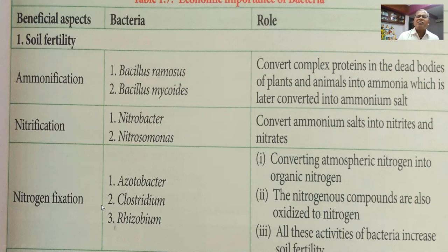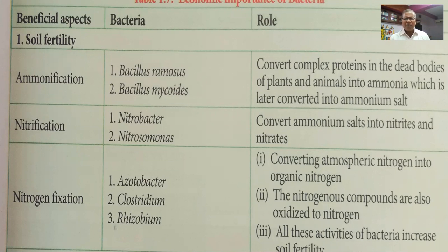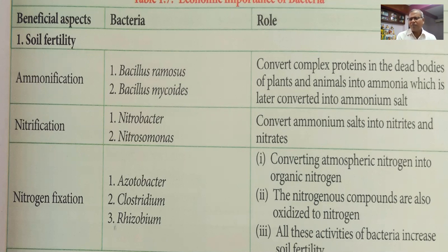Then nitrogen fixation — the fixation of atmospheric nitrogen by soil bacteria as well as root nodule bacteria. Acetobacter and Clostridium are two examples of atmospheric nitrogen-fixing soil bacteria.